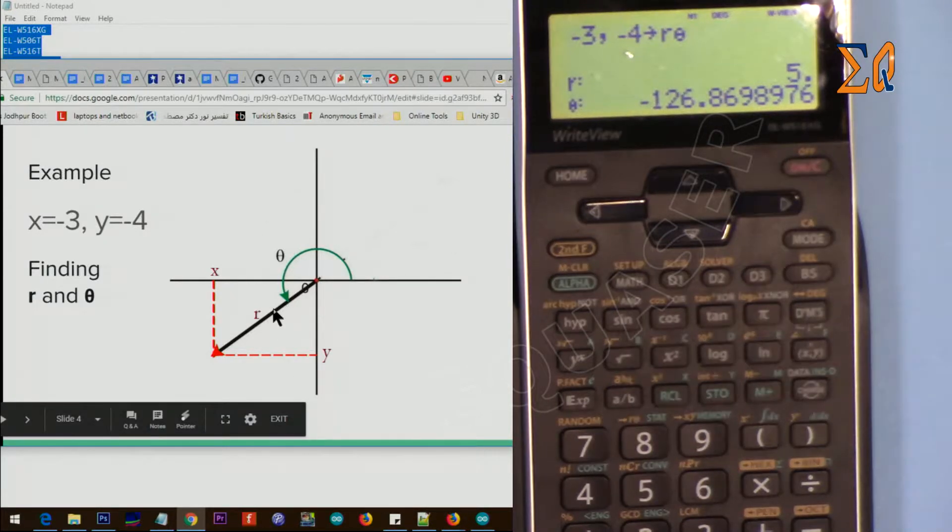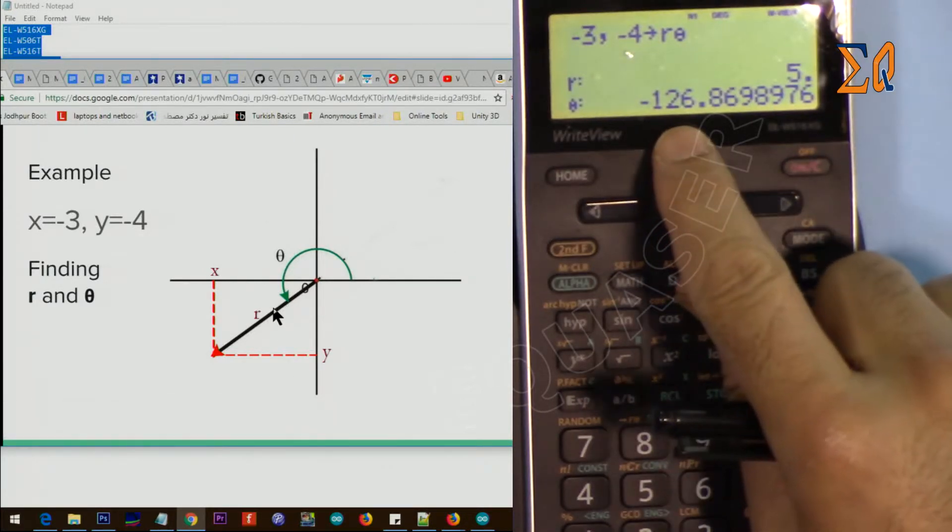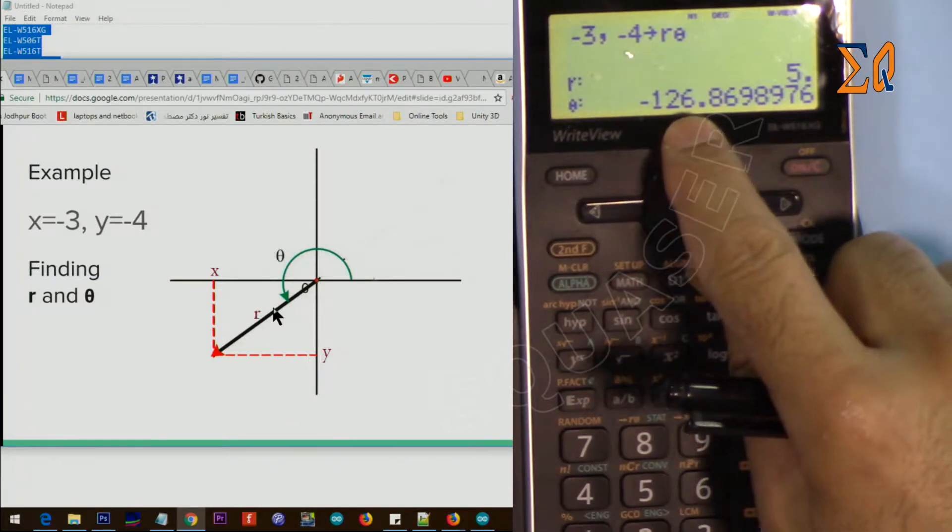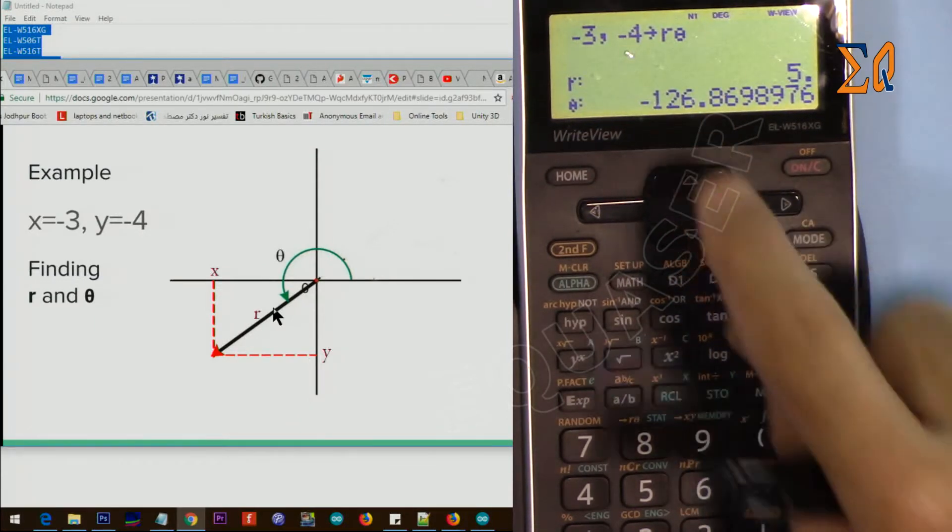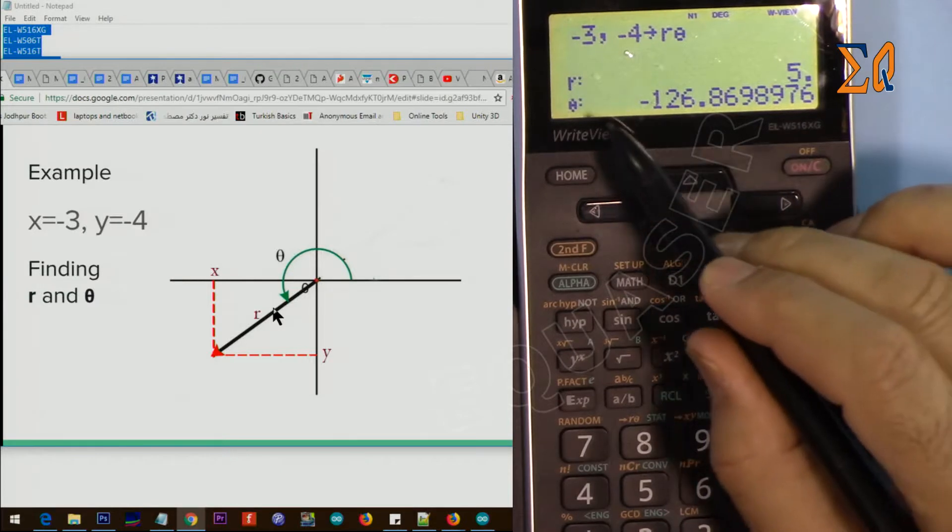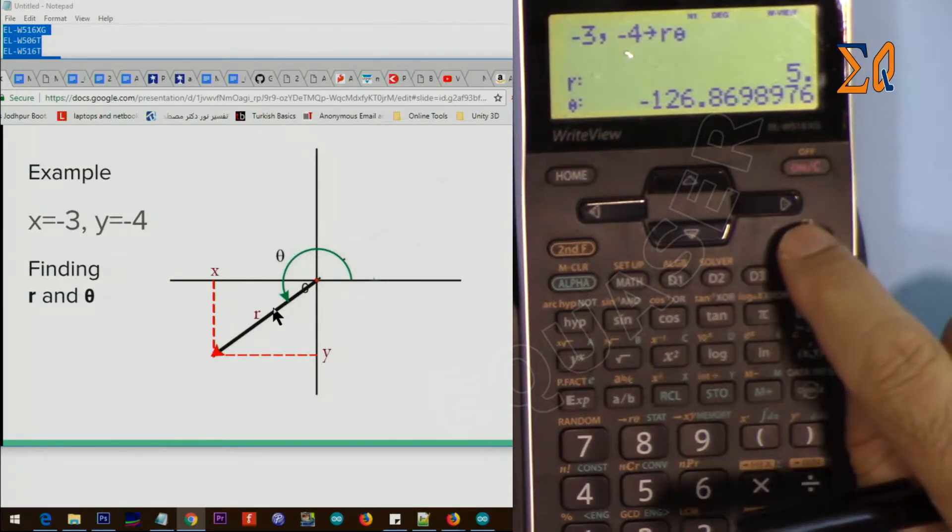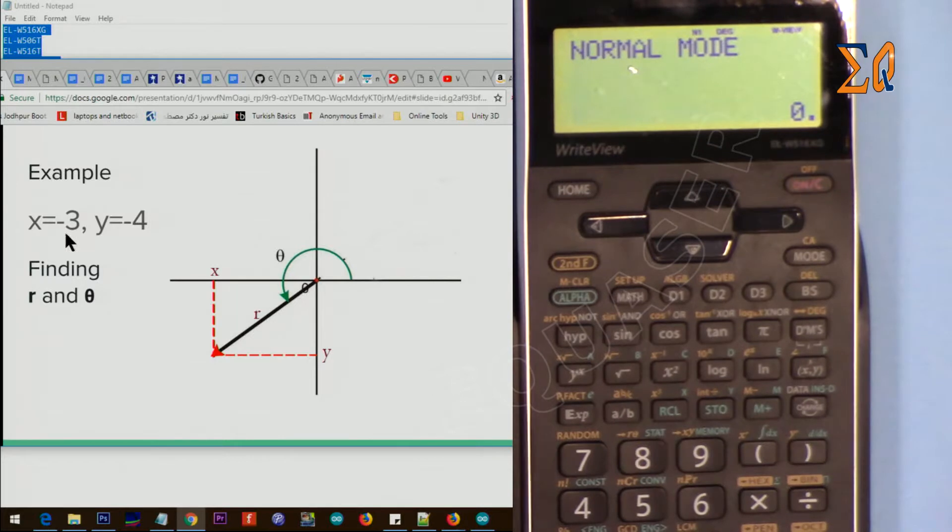So if you want to find that angle, you have to subtract this from 360 or add this to 360. Now this r and theta will always be available. The value that you always convert will be stored in the memory X and Y.